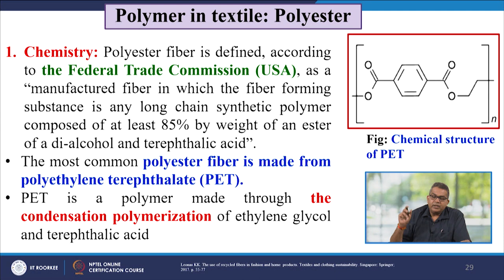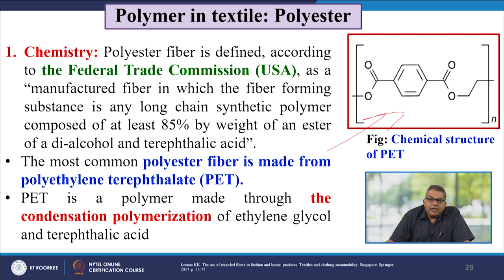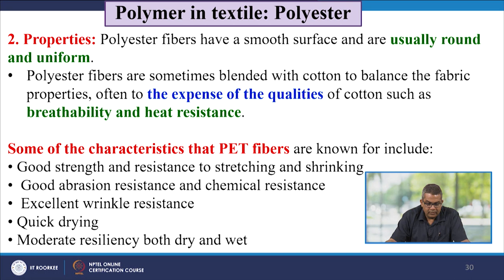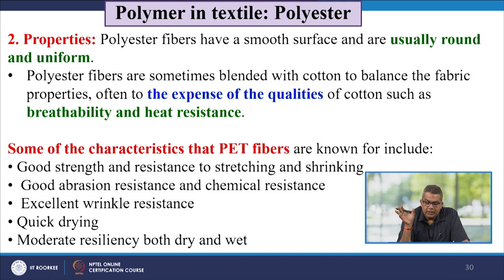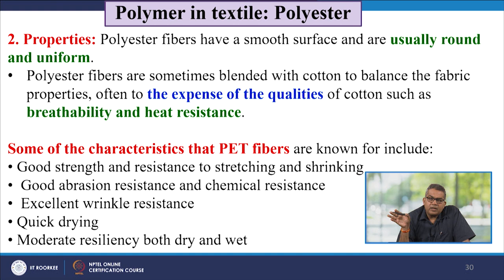The most common polyester fibre is made from polyethylene terephthalate (PET), a polymer made through condensation polymerization of ethylene glycol and terephthalic acid. Polyester fibres have a smooth surface and are usually round and uniform. They are sometimes blended with cotton to balance fibre properties, often at the expense of cotton qualities such as breathability and heat resistance. Characteristics of PET fibres include good strength and resistance to stretching and shrinking, good abrasion and chemical resistance, excellent wrinkle resistance, quick drying, and moderate resilience both dry and wet.